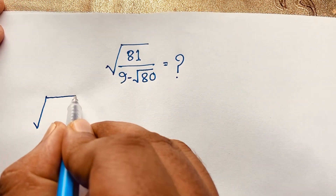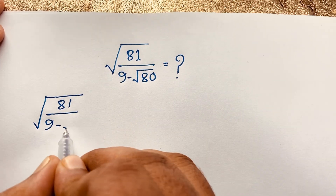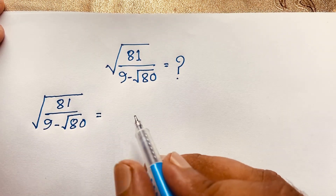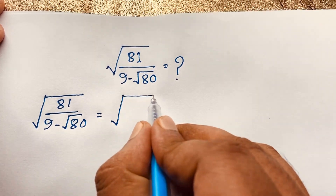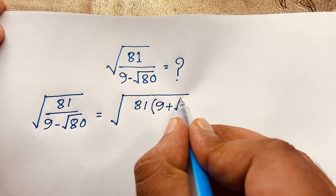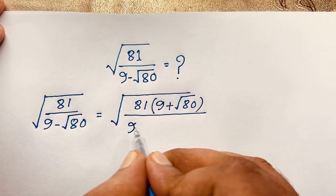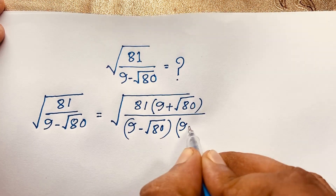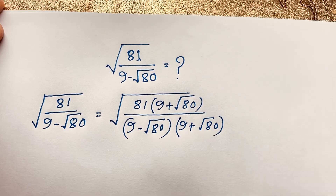So here is our question: square root of 81 over (9 minus square root 80). Now I multiply the numerator and denominator by the conjugate — that is, (9 plus square root 80) over (9 minus square root 80) times (9 plus square root 80).